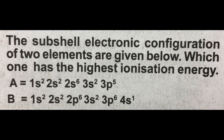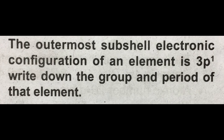Question number 1: The subshell electronic configuration of two elements are given below. Which one has the highest ionization energy? Here the elements' electron configurations are given and the ionization energy is to be determined. Question 2: The outermost subshell electronic configuration of an element is 3P1. Write down the group and period of that element.